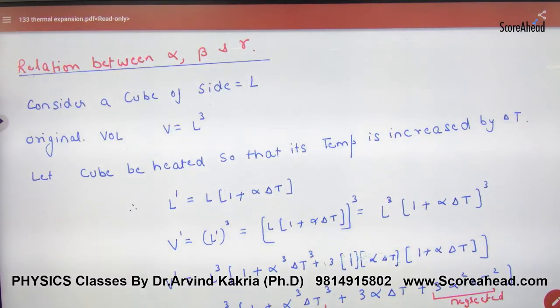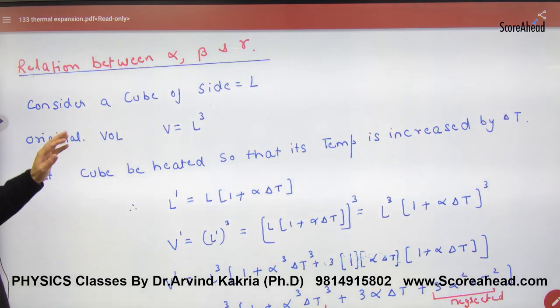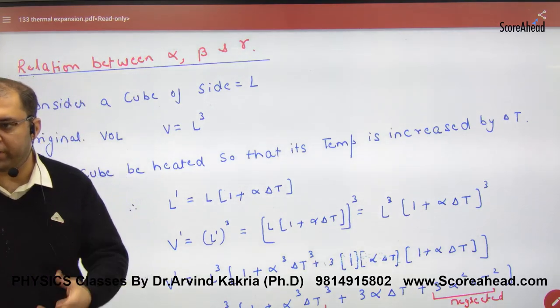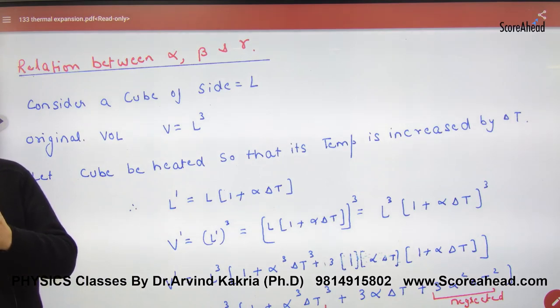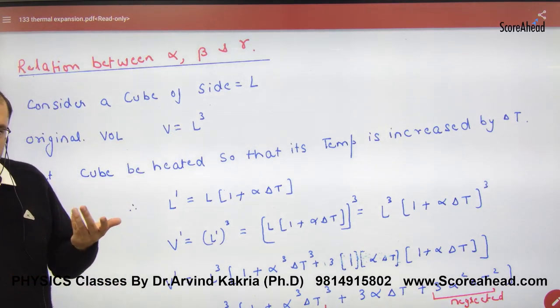So, the relation between alpha, beta and gamma. We have to work for this. Consider a cube, solid body, with length L. Take out the volume of L length. What will happen? L cube.